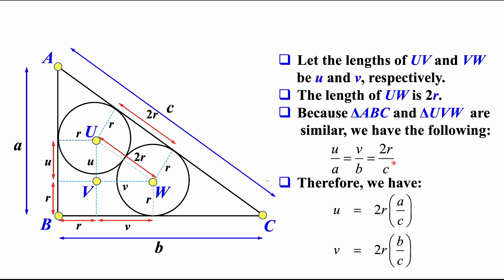This equality is shown here. By solving U and V from this proportion, we have UV equals 2R times AB over AC, and VW equals 2R times BC over AC. So we represent UV and VW using A, B, C, and the radius R.